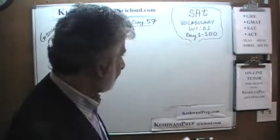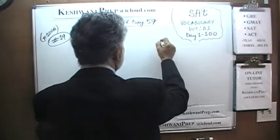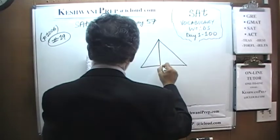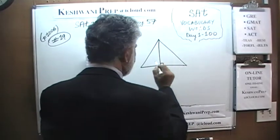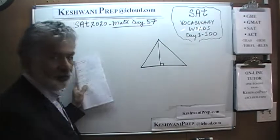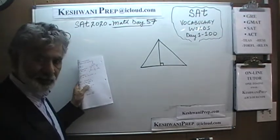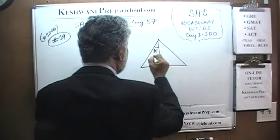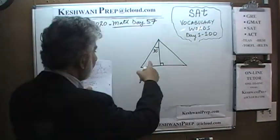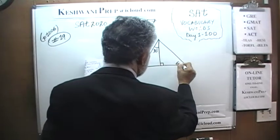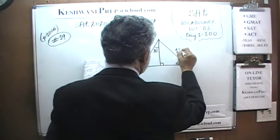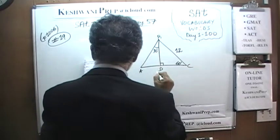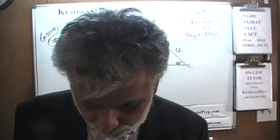In number 19, we are given a triangle. We are told that this is the right angle, and that this angle is being bisected — cut into two equal parts — a very important piece of information. This angle is 30, this angle is 60, and we are told that this side is 12. That is all that is given to us.